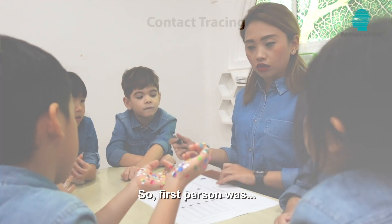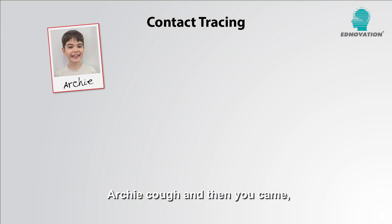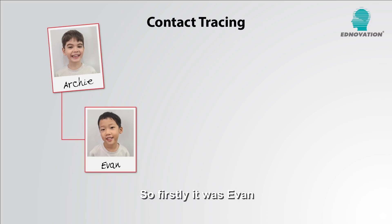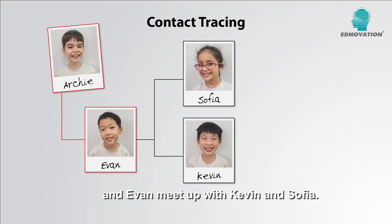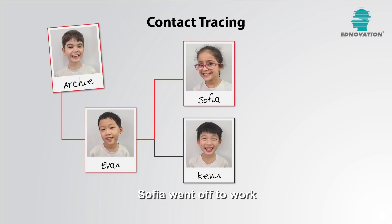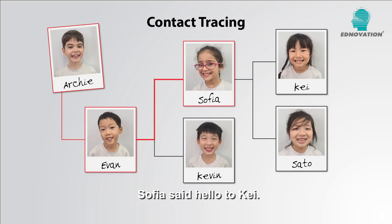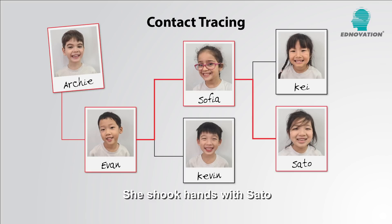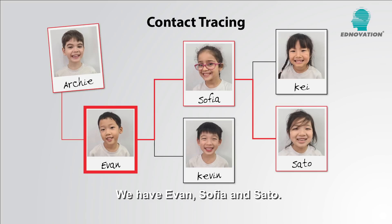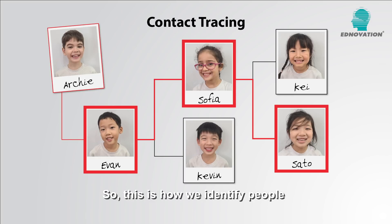So the first person coughed, came over to the table, and touched the table. Firstly it was Evan, and Evan met up with Kevin and Sophia. But did he touch Kevin? No — he touched Sophia. So Sophia went off to work and met up with Sato and Kay. Sophia said hello to Kay, but she shook hands with Sato, and that's how Sato got the virus. So we have Evan, Sophia, and Sato. This is how we identify people who get viruses.